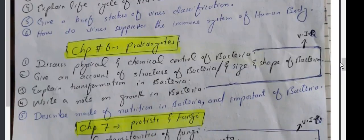Chapter 6 questions: Discuss physical and chemical control of bacteria. Give an account of structure of bacteria, size and shape of bacteria. Explain transformation in bacteria. Write a note on growth in bacteria. Describe mode of nutrition in bacteria. Importance of bacteria.